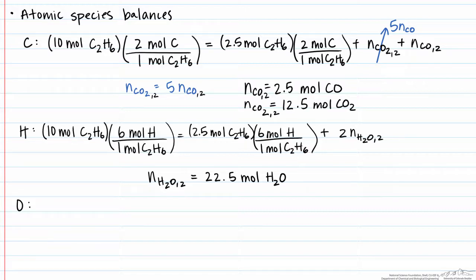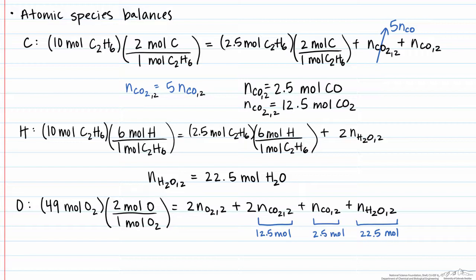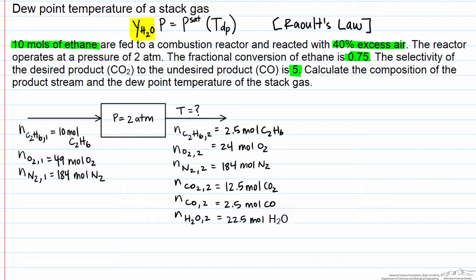Finally, we do our oxygen balance. Coming in, we have 49 moles of O2, with 2 oxygen atoms per mole. This equals the 22.5 moles from H2O, plus the 2.5 moles from CO, plus 2 times the 12.5 moles from CO2, since CO2 has 2 oxygen atoms, plus 2 times the number of moles of O2 coming out. Solving, the number of moles of O2 coming out equals 24 moles.